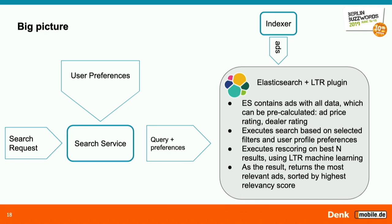The top N results — around 100 in our case, a mix arrived at through trial and error balancing relevancy scoring performance and technical performance — are then re-scored using the Learning to Rank machine learning model. The scores from the first step are discarded, and adverts are scored by our model based on all input features: where the advert falls in the user preference distribution, completeness of description, number of images, dealer rating relative to others. The result is returned to search with adverts sorted by the highest relevancy score.